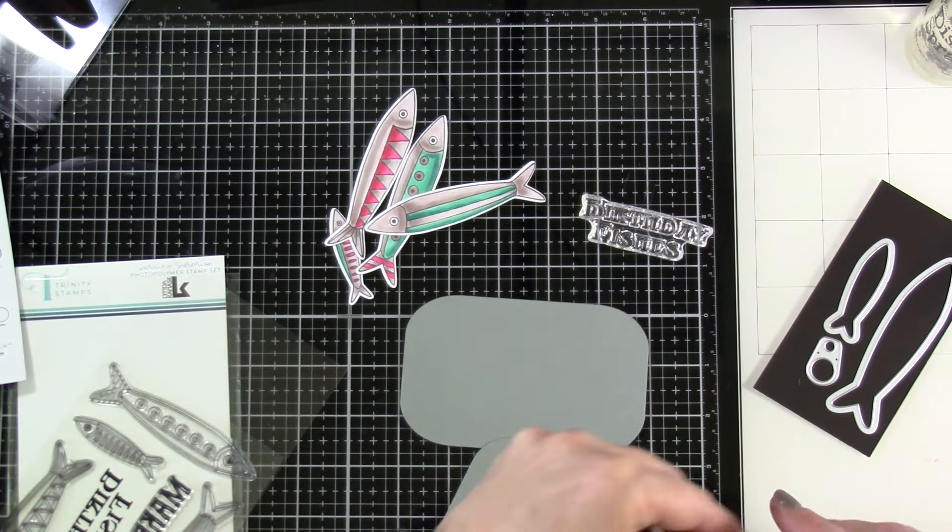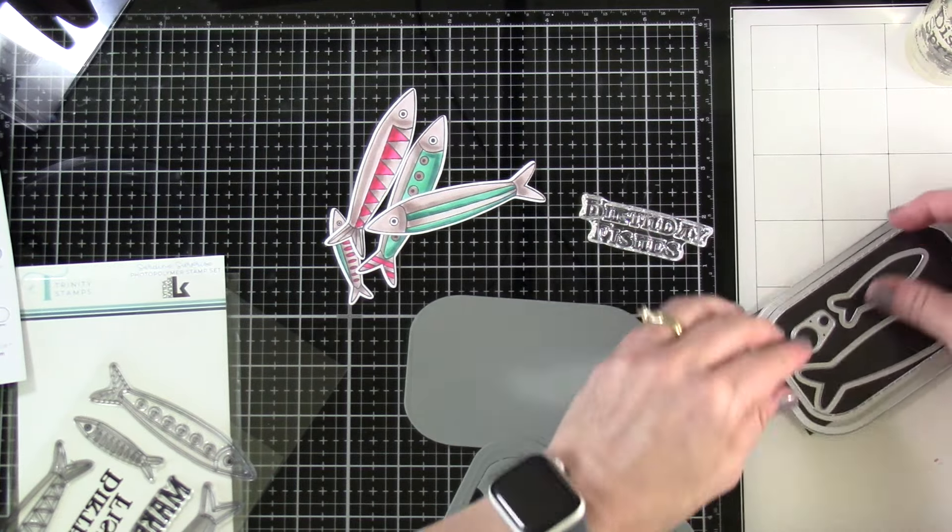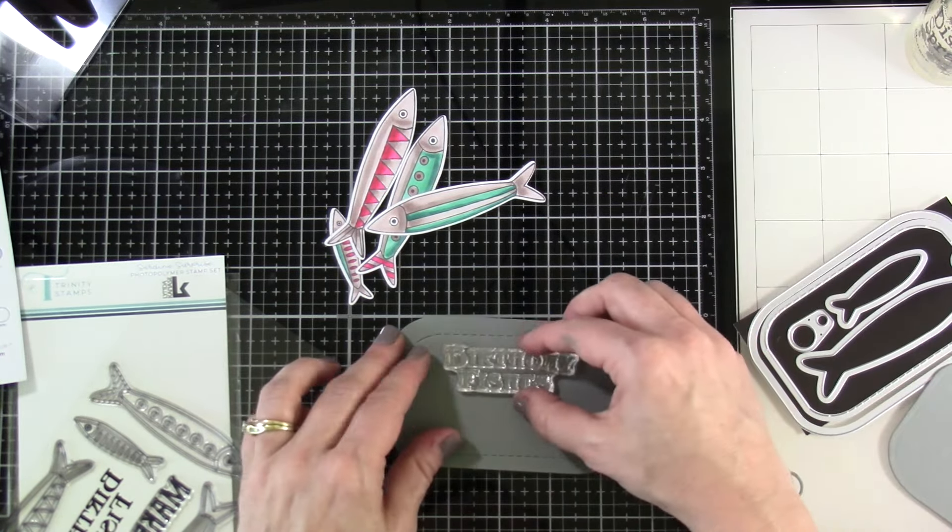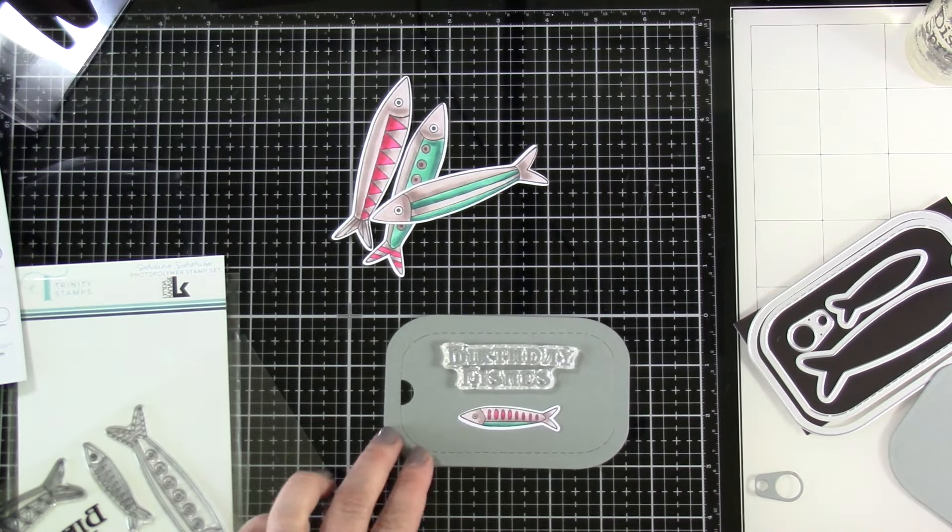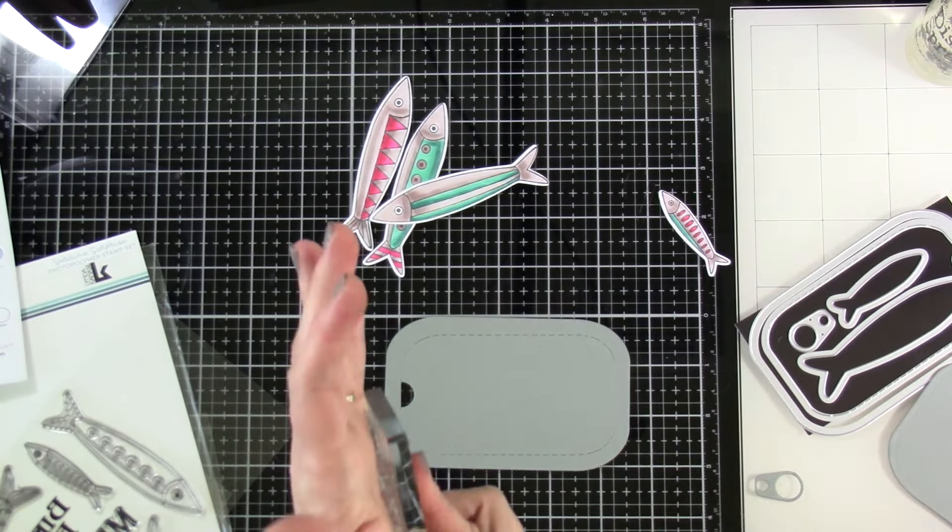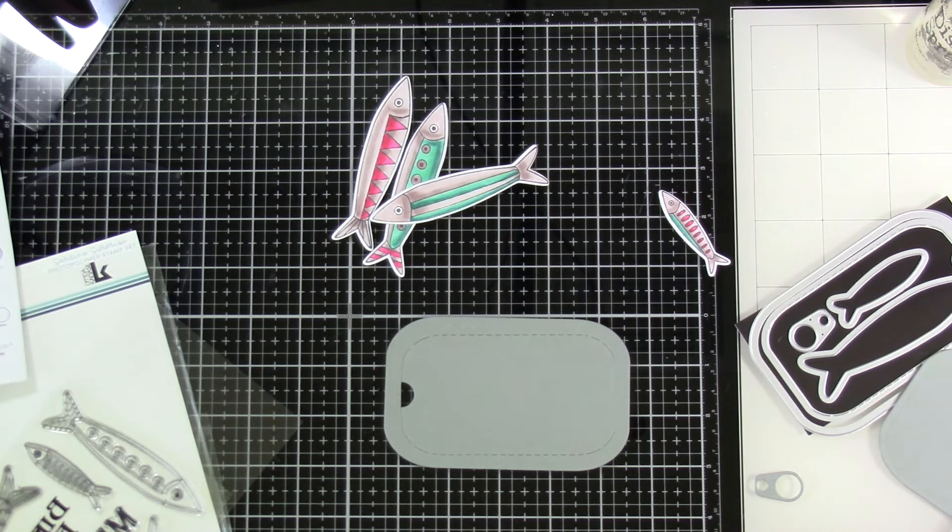As you can see the one has all that perforation on it which is great because you can peel that back like a little can. And then that last piece uses just the one big piece. So I'm going to kind of play around with placement and then we'll use this stamp that says birthday fishes from that sardine surprise.